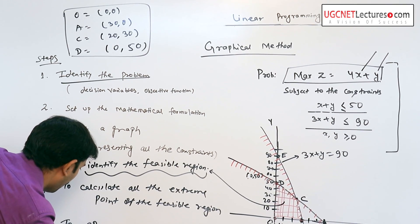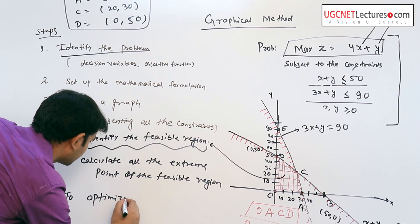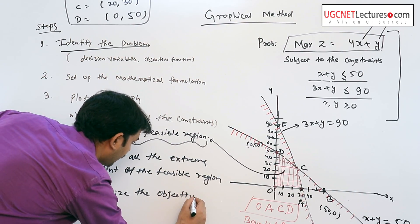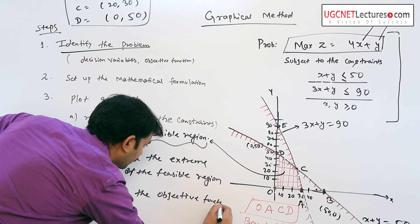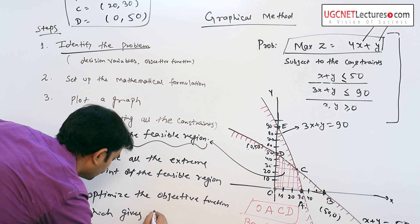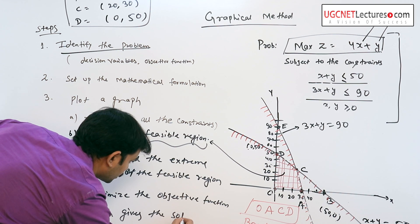The fifth step is to optimize the objective function, which gives OACD as the solution.